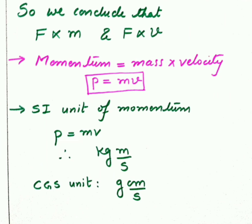So one new physical quantity was framed by combining mass and velocity and that physical quantity is known as momentum. So momentum is actually product of mass and velocity and its symbol is small p.